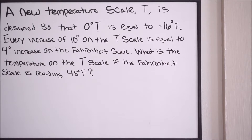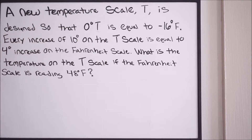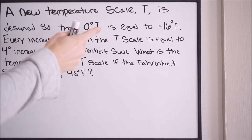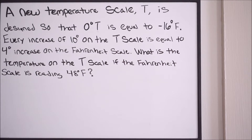The first step is to recognize that you are dealing with a linear relationship here. At 0 degrees T, that equals negative 16 degrees Fahrenheit. For every increase of 10 degrees on the T scale, that equals a 4 degree increase on the Fahrenheit scale. We could graph this relationship on a grid and it would be a linear function — this is a linear relationship, and that is what you have to take away to figure out the direction of this problem.